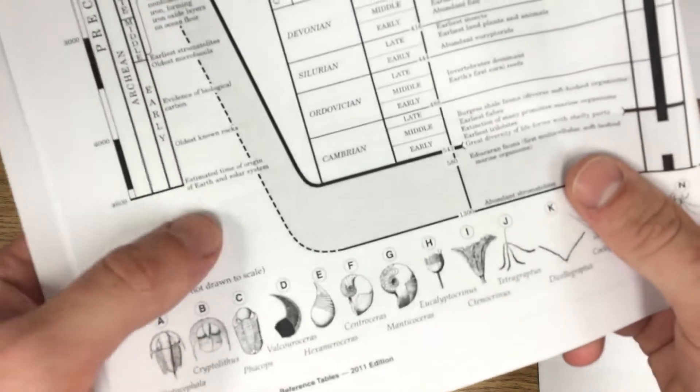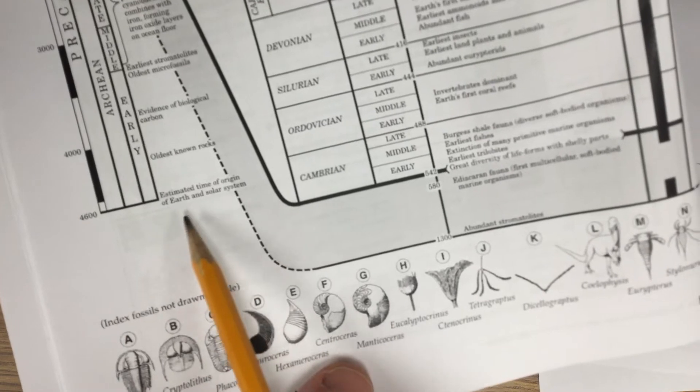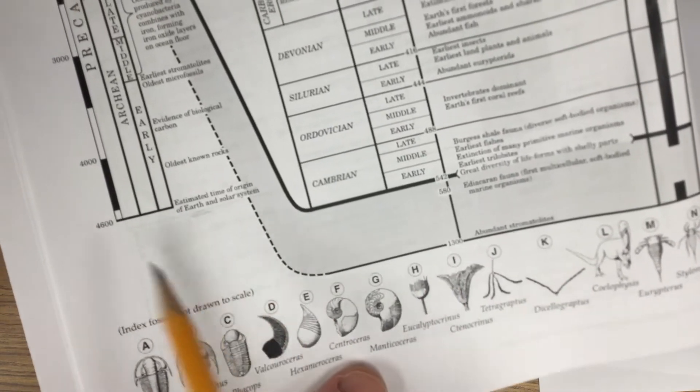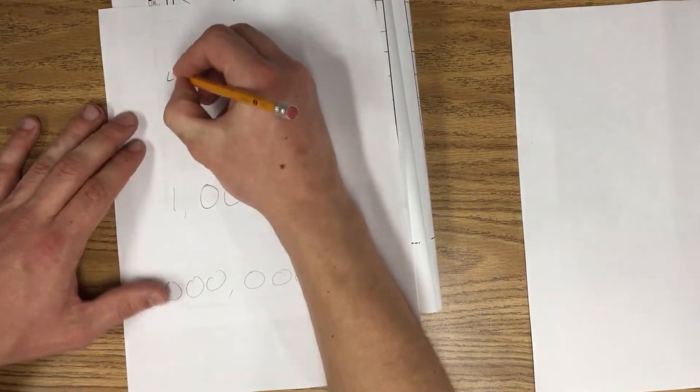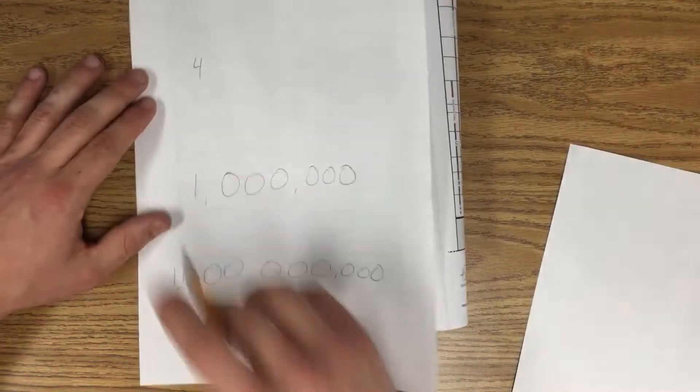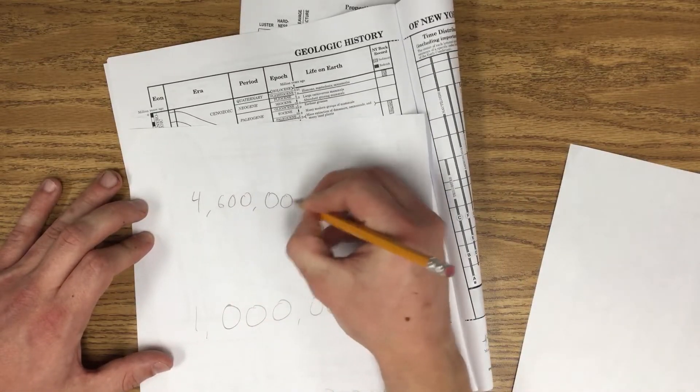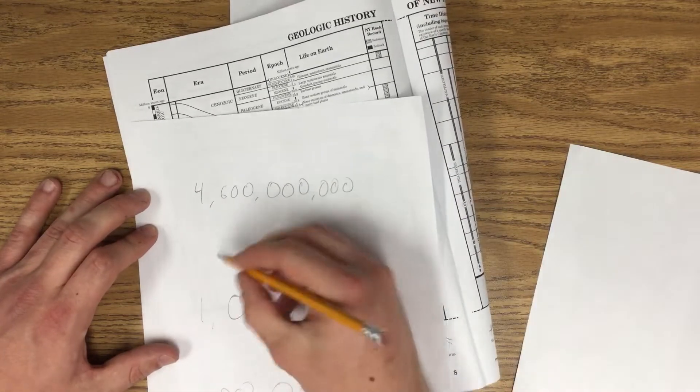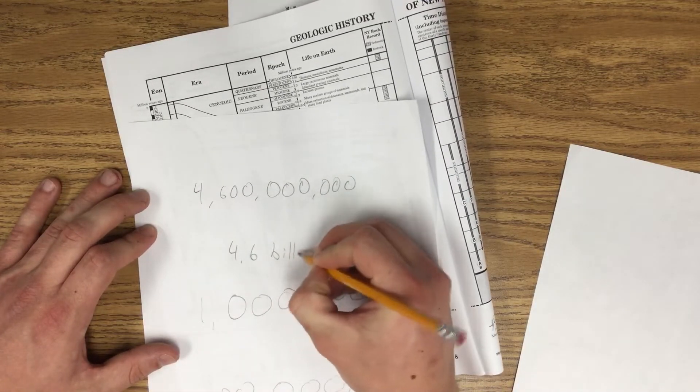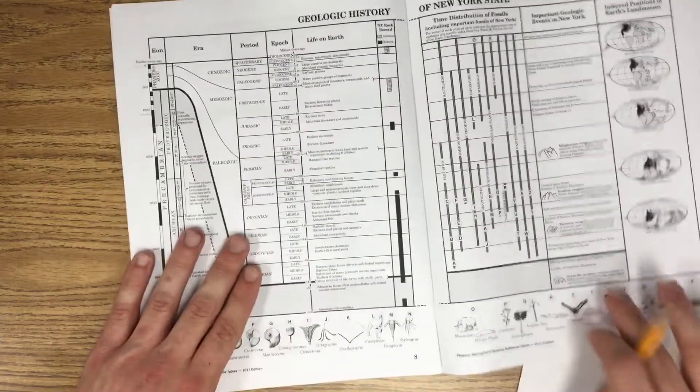So if you look at where it says 4600 right there, it says estimated time of origin of Earth. Origin just means the beginning. So this is when Earth began. So if they ever ask you the age of Earth, it's 4,600 million. So 4,600, and I know million has six zeros after it. So the age of the Earth is 4.6 billion years old. Just so you know, that's a side note. Anyway, let's get into this.